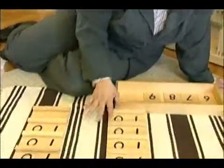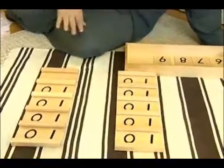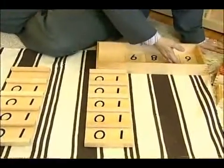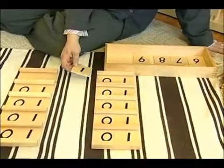These are called teen boards. You first take out each of the boards and leave the numbers in the box. As you take them out, take them out in order and show the children.